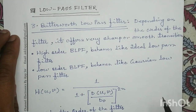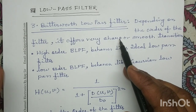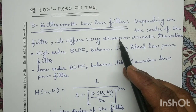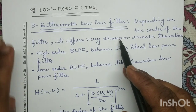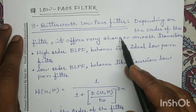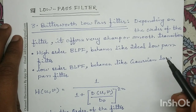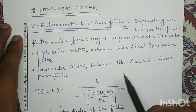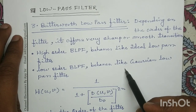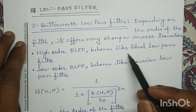The Butterworth low pass filter's performance varies between that of the ideal low pass filter and the Gaussian low pass filter. In other words, the performance of the Butterworth low pass filter depends upon the order of the filter. If the order is low, it behaves like a Gaussian low pass filter; if the order is high, it behaves like an ideal low pass filter.